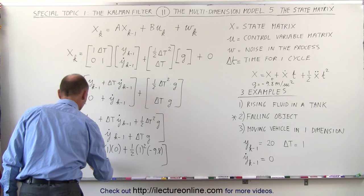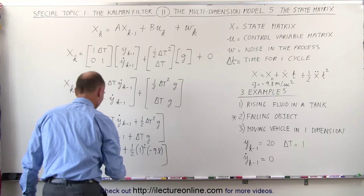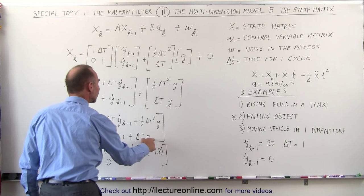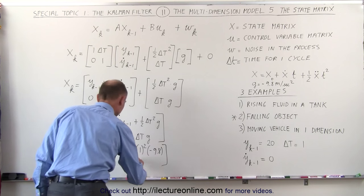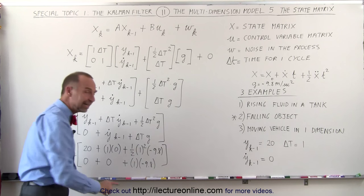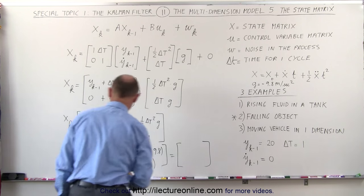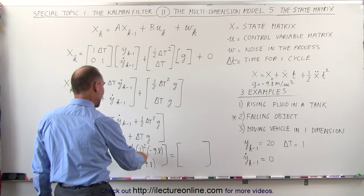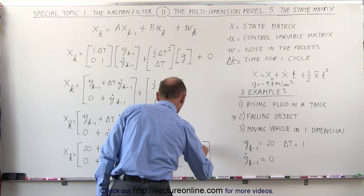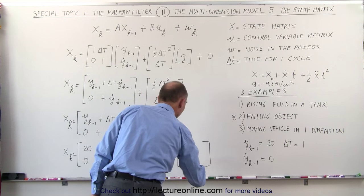On the second row we get zero plus the velocity in the y direction from the previous instant, a second ago, which is zero, plus delta T times g. Delta T is one second and g is minus 9.8. This gives us the new velocity one second later. So the result becomes 20 minus 4.9 equals 15.1 meters — that's the new position — and minus 9.8 meters per second is the new velocity.